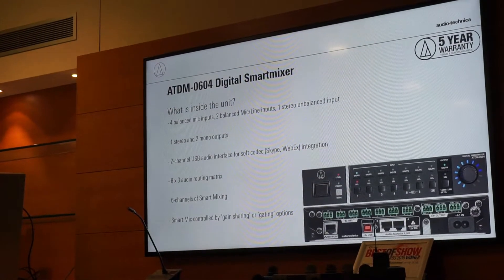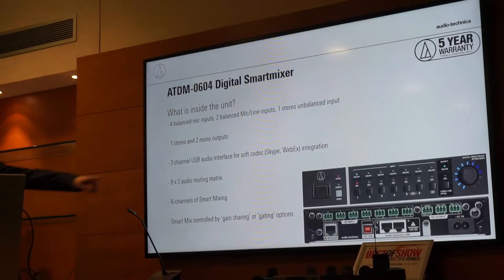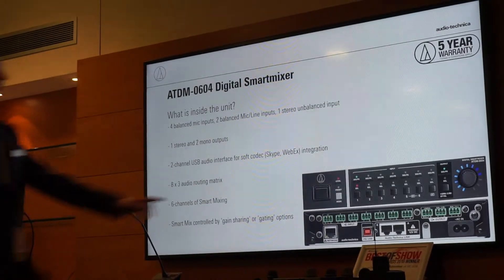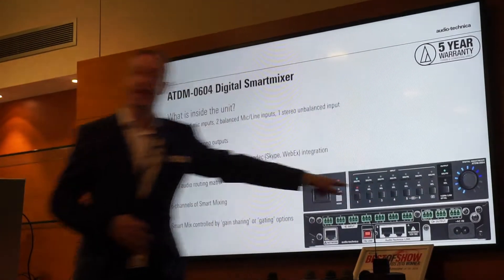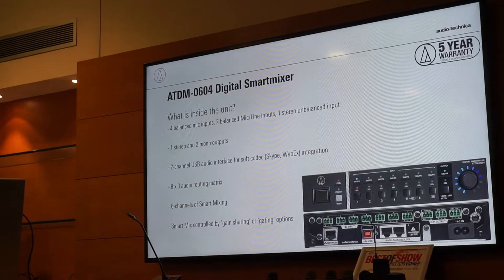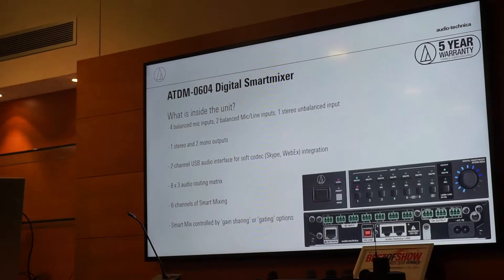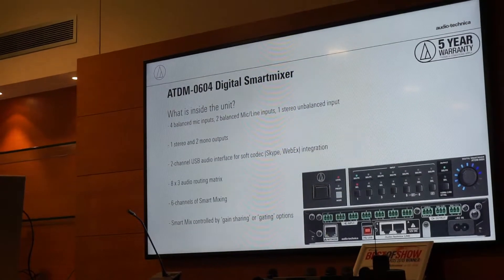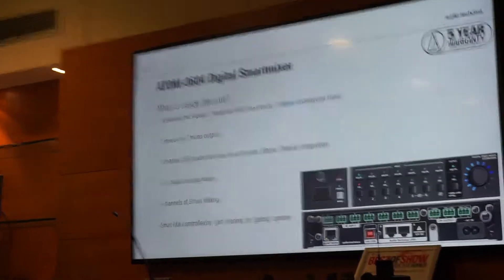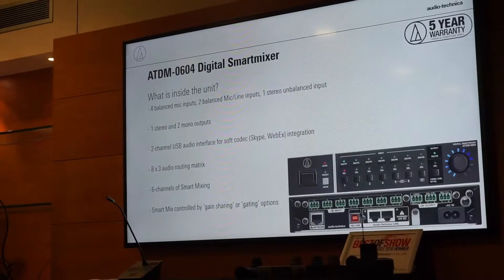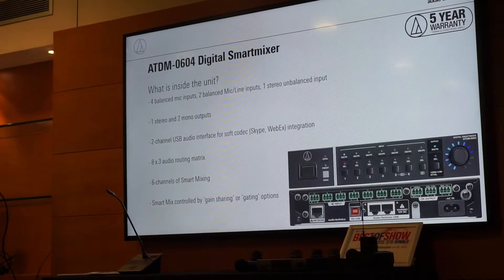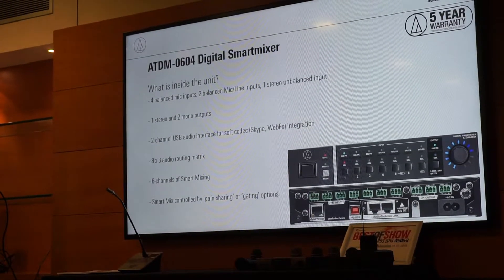If you look down in the corner where the outputs are — I'll just show you here — you've got balanced and unbalanced. The stereo is the unbalanced and the mono outputs are the balanced. If you wanted to have the stereo as a balanced output and the mono as an unbalanced output, the software allows you to flip those outputs so you can choose exactly how you want to connect it.